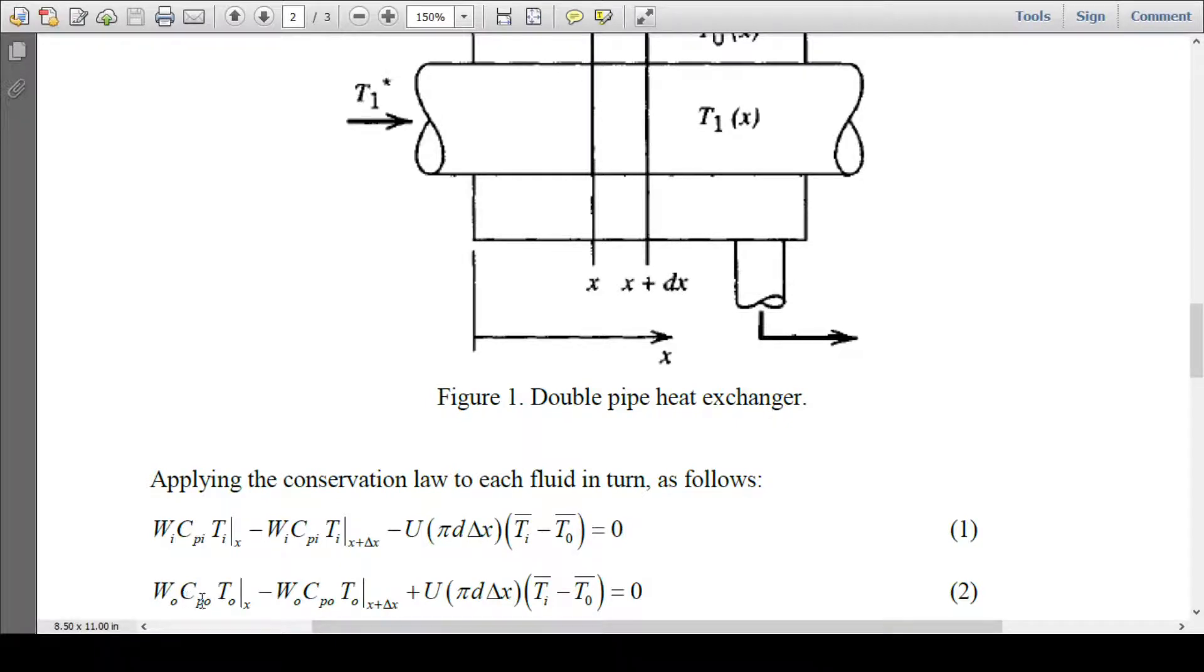W0 CP0 T0 T not x minus leaving with the water W0 CP0 T0 T not x plus delta x. This much is the energy cold water is gaining from the distillate: U pi D delta x TI bar minus T not bar.